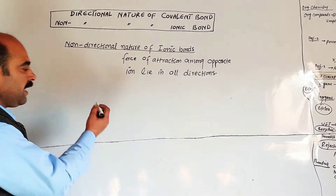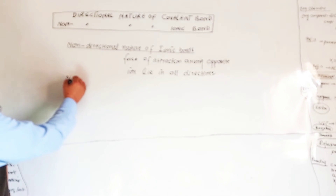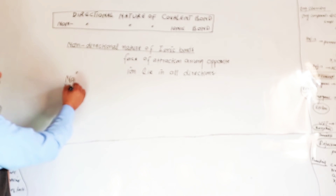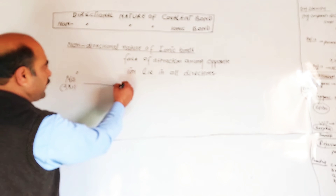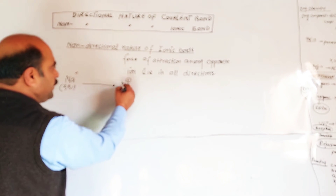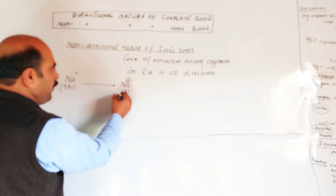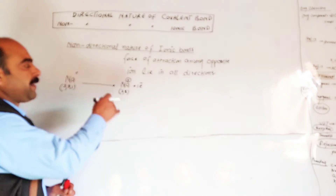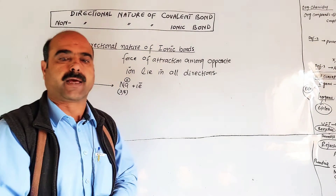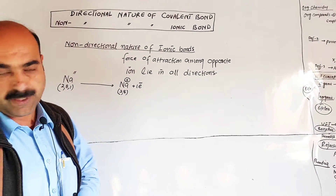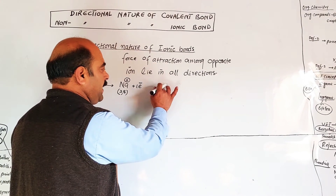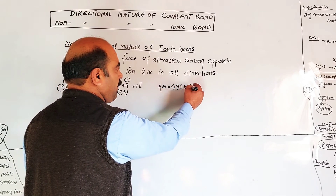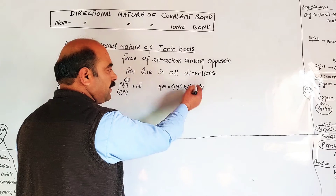For example, sodium has atomic number 11 and electronic configuration 2, 8, 1. When it loses one electron, sodium is converted into sodium ion. The energy required to remove that electron is the ionization energy — for sodium, IE is 496 kilojoules per mole.